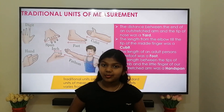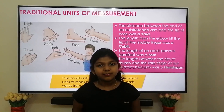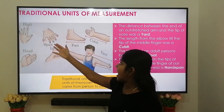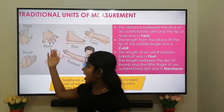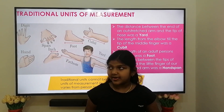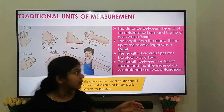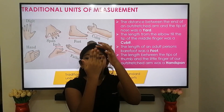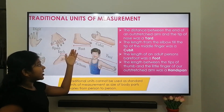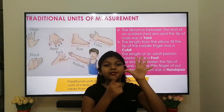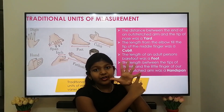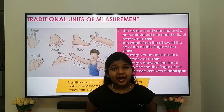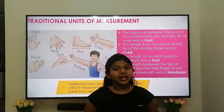In early times, people used different parts of their body such as hand, arm and foot for measuring length. These units of measurement are called traditional units of measurement. Some of the traditional units are digit, span, foot, cubit, yard, fathom, inch and hand. The most commonly used are hand span, foot, cubit and yard. The distance from the end of a round stretched arm to the tip of our nose is called a yard. The length from the elbow to the tip of our middle finger is called a cubit. The length of an adult person's bare foot is called a foot. The length between the tip of our thumb to the tip of our little finger of a round stretched arm is called a hand span. But these traditional units are not standard units of measurement, as the sizes of body parts vary from person to person — that is why they are not accurate and reliable units of measurement.